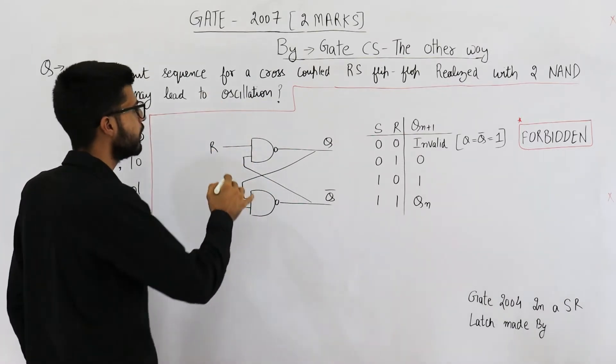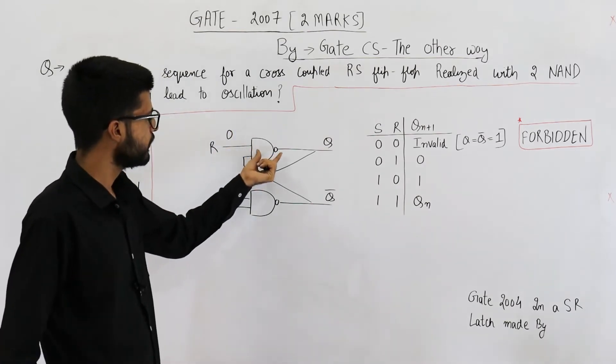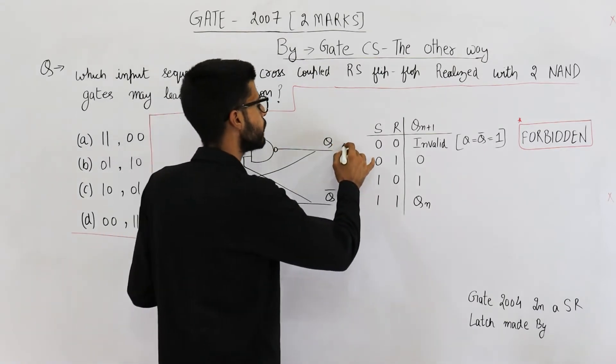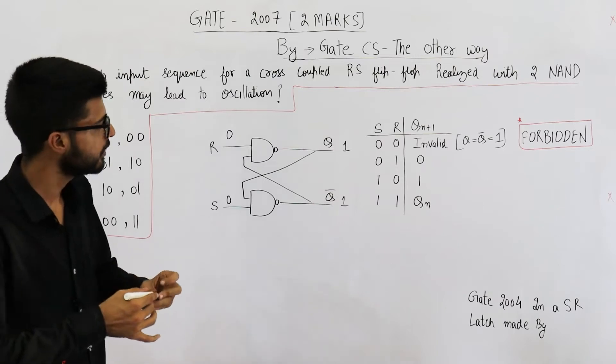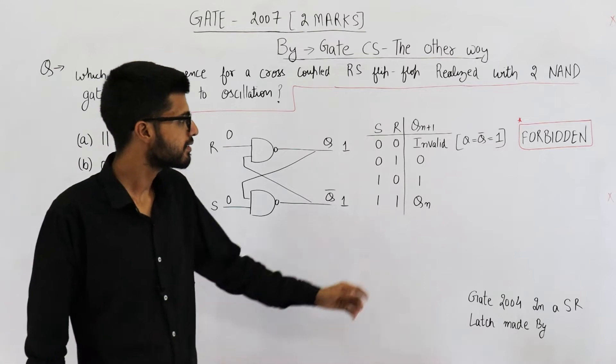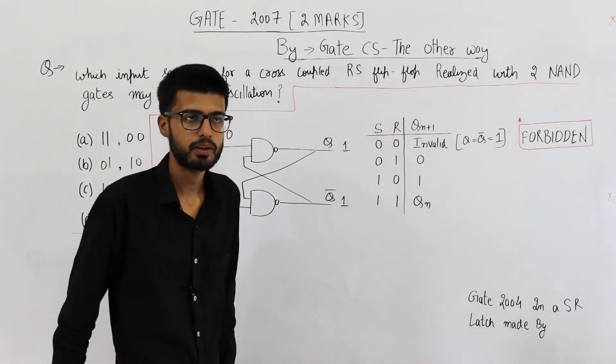Let us say R and S both are 0, 0. Now if even one of the input of NAND gate is 0, its output is going to be 1. So Q and Q bar both will be 1. You can see a variable and its complement is 1. This is not possible. That's the reason we declare this state as invalid state.